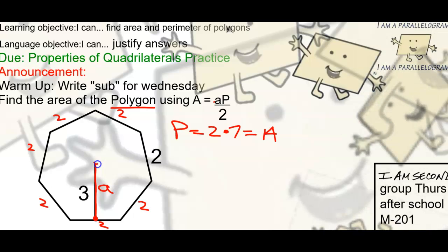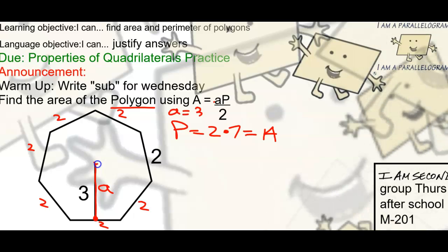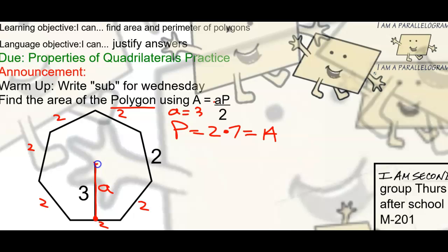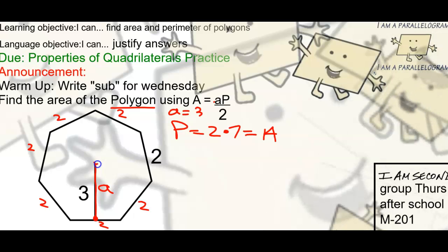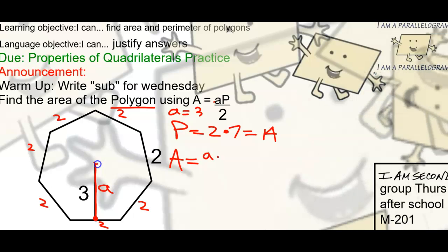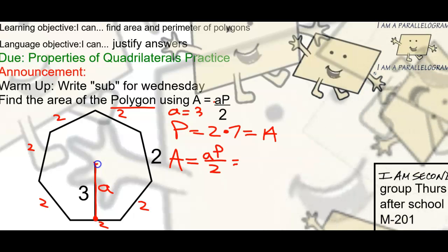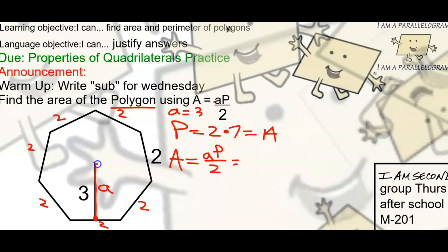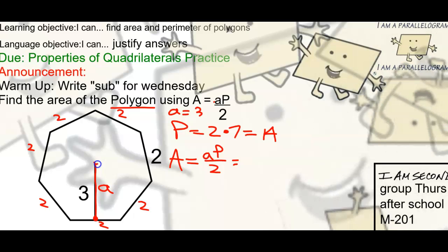So apothem is 3. If little a is 3 and P is 14, just plug it in. Little a times P divided by 2. My area is apothem times perimeter divided by 2. So it's going to be 3 × 14 divided by 2.